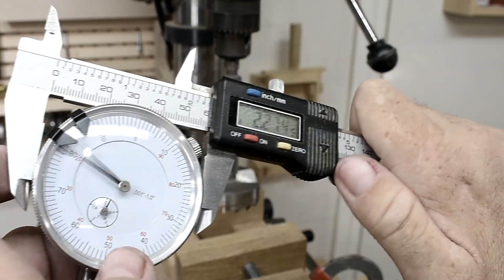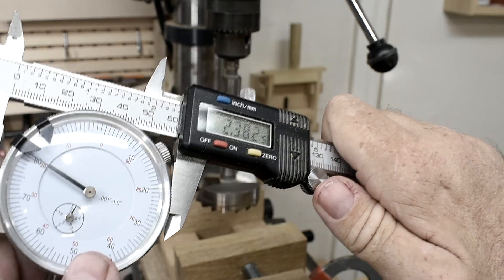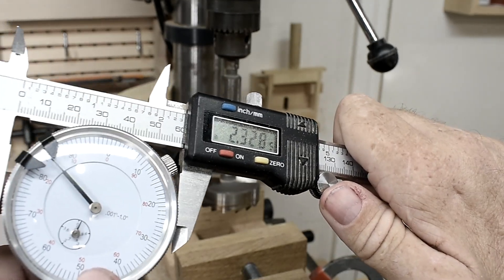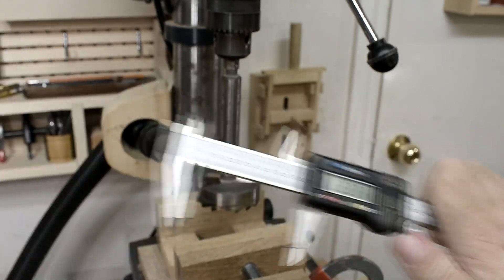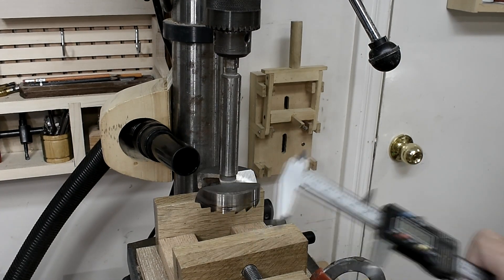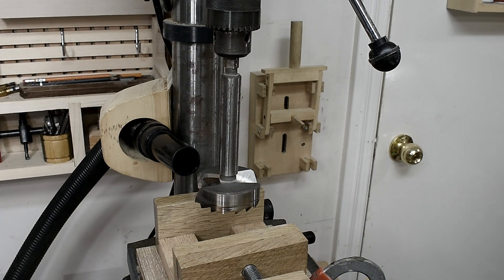I'm measuring my dial indicator and it's 2.3 inches and I have a Forstner bit here that's two and a half inches, so that'll work fine.